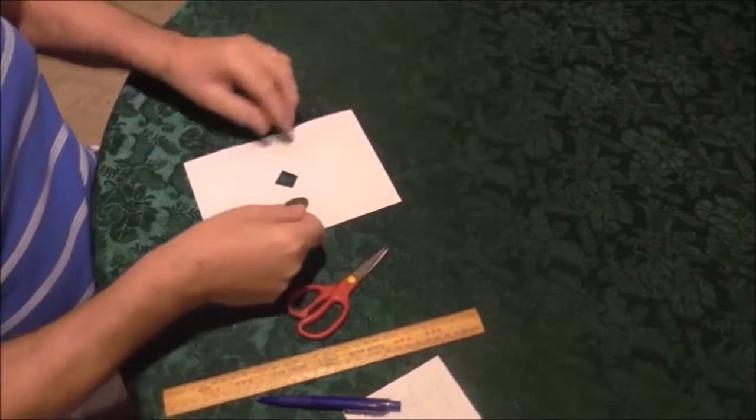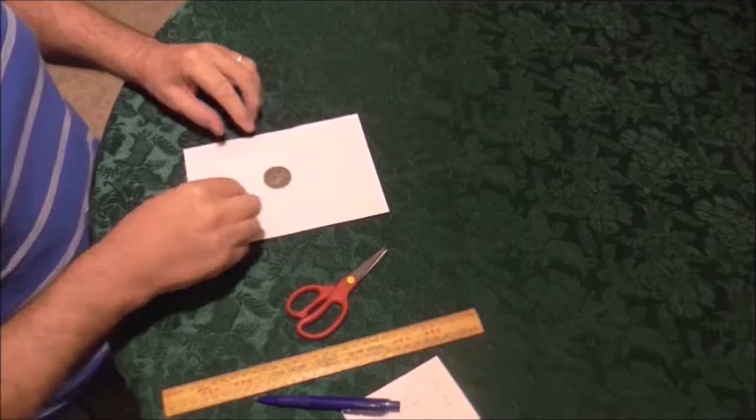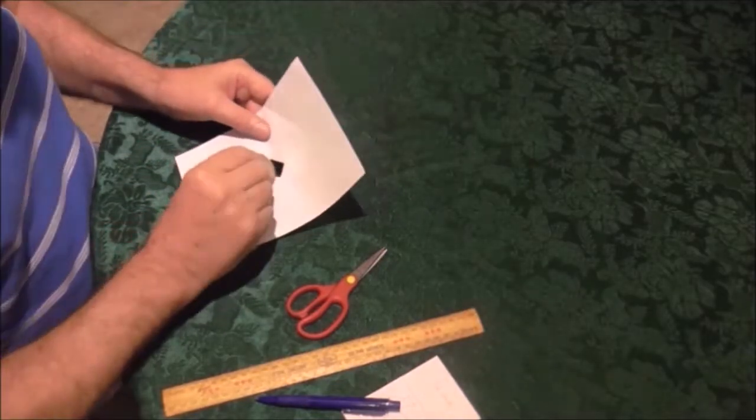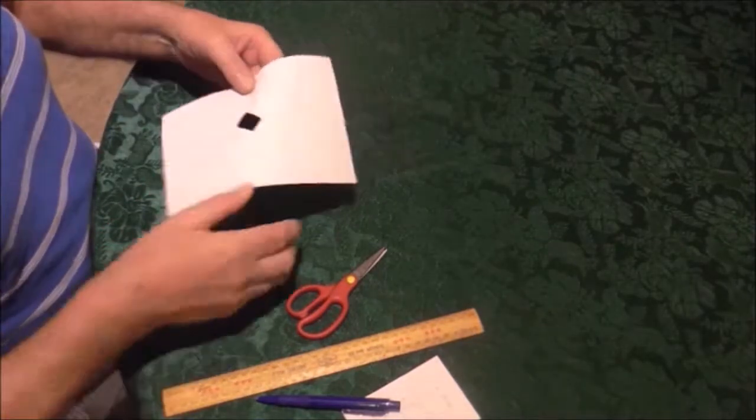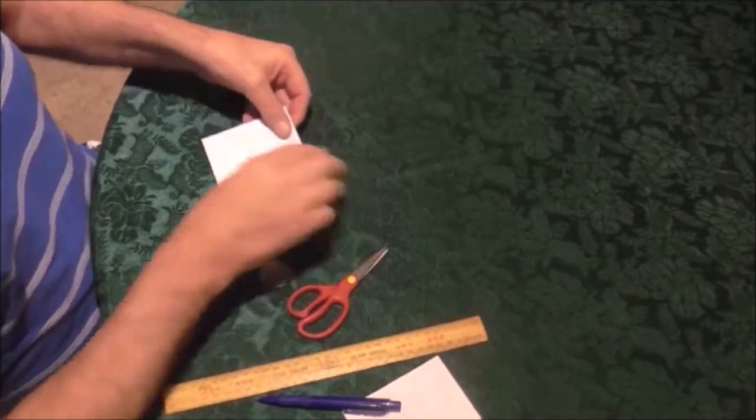So the coin can't go through unless you tear the paper somehow. Now the object of this is to ask someone to get that large coin through that small hole without tearing the paper. It won't go this way. It won't go that way. And that's their puzzle. How do they do it? Well, this is how you do it.